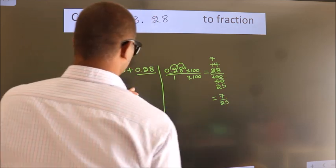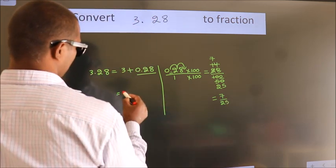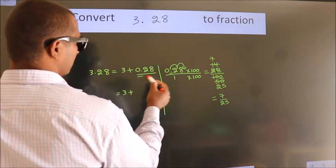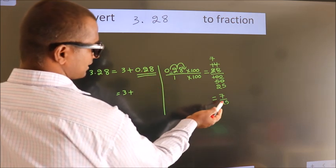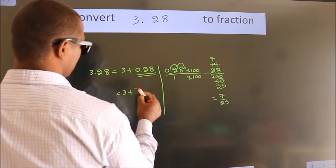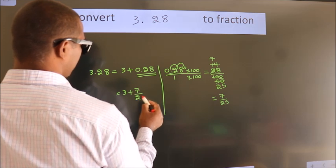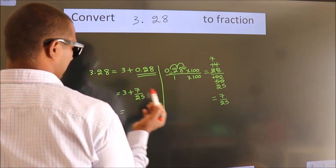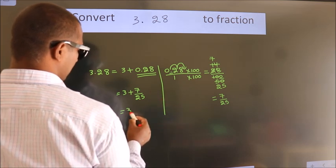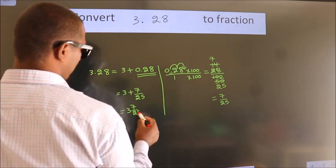Now here, 3 plus in place of 0.28, now we write this fraction 7 by 25. 3 plus 7 by 25. In mixed fraction it is 3 and 7 over 25.